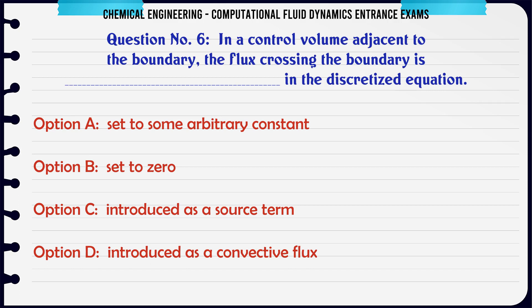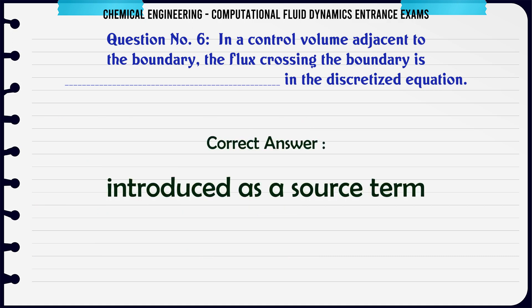In a control volume adjacent to the boundary, the flux crossing the boundary is, in the discretized equation: A. Set to some arbitrary constant. B. Set to 0. C. Introduced as a source term. D. Introduced as a convective flux. The correct answer is C: Introduced as a source term.